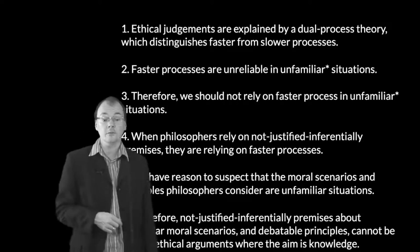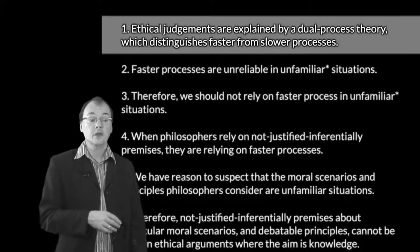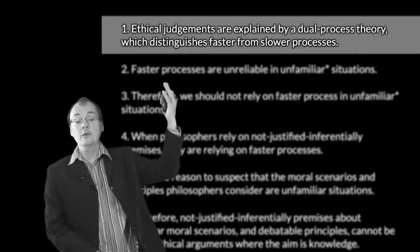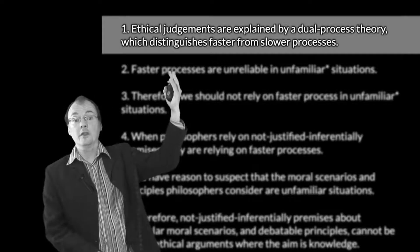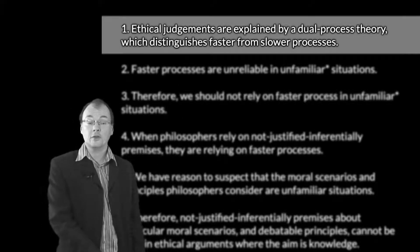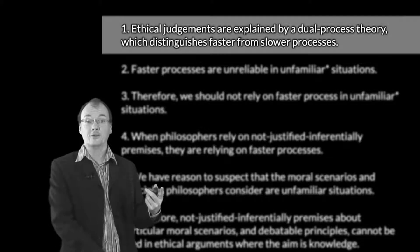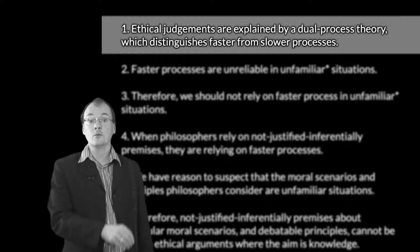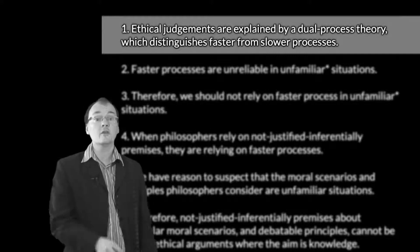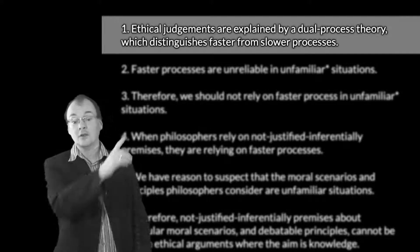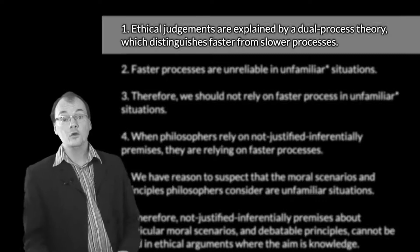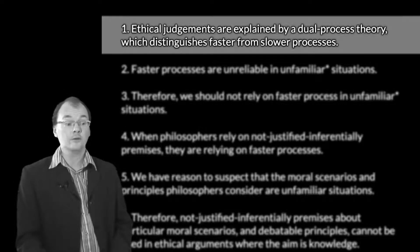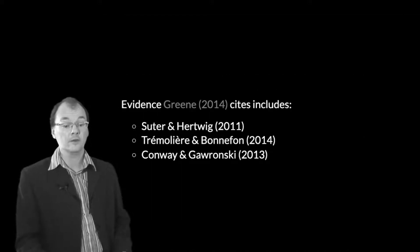Of the argument's various premises, the one where we're most likely to find an objection is the first premise — the claim that there is a dual process theory of moral psychology. That's why we're interested in the evidence for the dual process theory and later in the evidence against it. We want to see if there's a way to challenge this first premise and so avoid the dramatic implications this argument has for ethics.